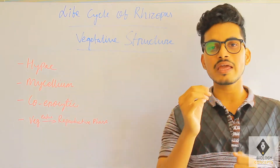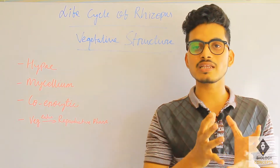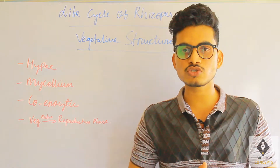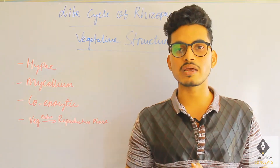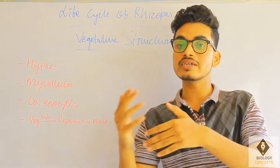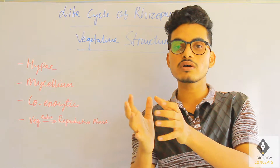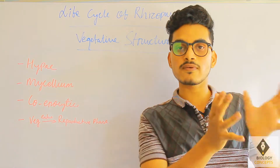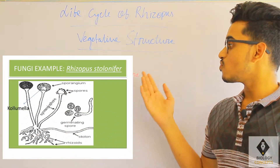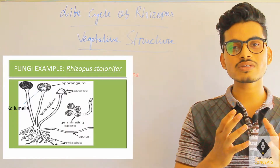Whenever the mycelium moves from the vegetative phase into the reproductive phase, a black color structure develops on the mycelium, giving it a blackish appearance. This indicates that the mycelium has undergone the reproductive phase. The mycelium is divided into three types of hyphae: sporangiophores, stolons, and rhizoids.